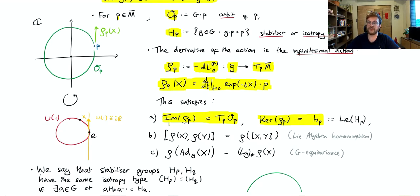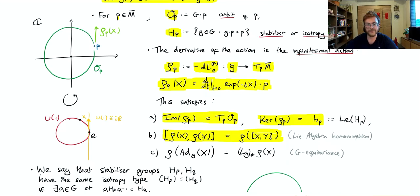The second property that the infinitesimal action satisfies is that it's a Lie algebra homomorphism. If we chose the opposite sign convention when defining the infinitesimal action, then this would be a Lie algebra anti-homomorphism — I personally prefer this choice, although many authors choose the other way. Finally, we have an equivariance property: if we apply the adjoint action to a Lie algebra element X and then the infinitesimal action, we get the same thing as if we first apply the infinitesimal action and then apply the pushforward of the Lie group action.